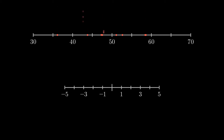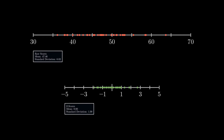Another important property of the z-score is its ability to scale large ranges of values. Above is a number line of raw scores represented by dots, where the mean is equal to 47.46 and the standard deviation is equal to 6.02. By converting to z-scores, those values are compressed into a smaller region where the mean is 0 and the standard deviation is 1. If you have a raw value of 59.51, which is exactly two standard deviations from the mean, this corresponds to a z-score equal to 2.